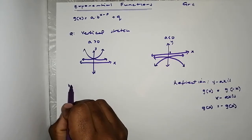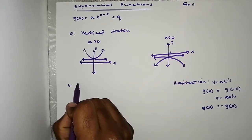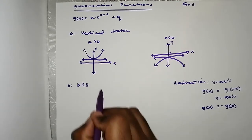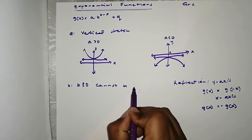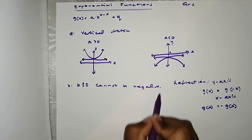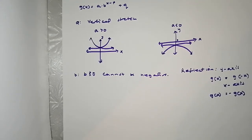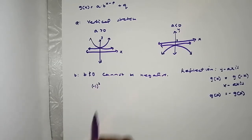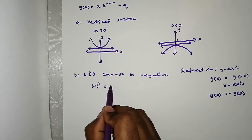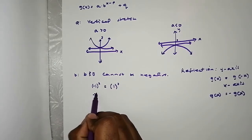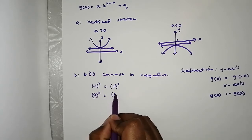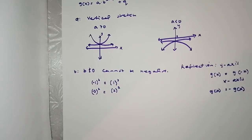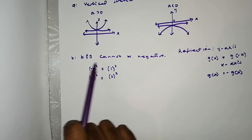Let us look at B. B has a number of restrictions. First of all, B cannot be negative. Let us consider why that is the case. For example, negative 1 squared equals 1 squared, and negative 2 squared is the same as 2 squared. So the behavior we are seeing here is not the behavior of an exponential function, and hence B cannot be negative.